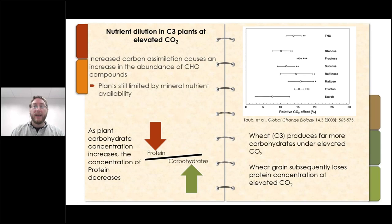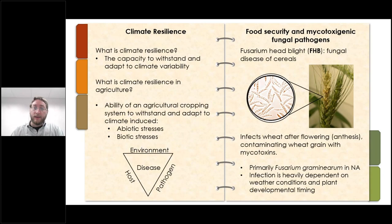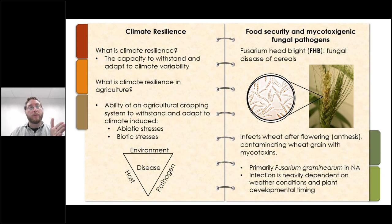One of the two chief concerns in improving agriculture is finding both disease-resistant and climate-resilient crops. Climate resilience is the capacity to withstand and adapt to climate variability — in agriculture, it's the ability of an agricultural cropping system to withstand and adapt to climate-induced abiotic and biotic stresses. In this work, we're primarily concerned with the effects of elevated CO2 on wheat nutrition, and also with biotic stress from diseases. The disease we are primarily concerned with is Fusarium head blight, a fungal disease of cereals primarily caused by Fusarium graminearum in North America.